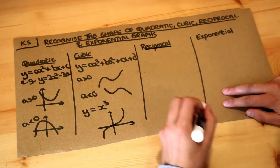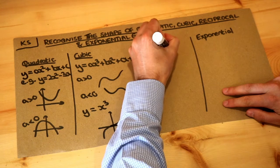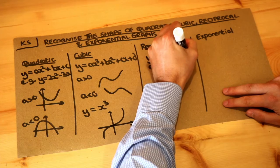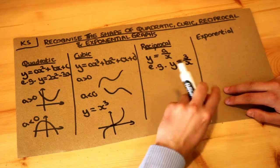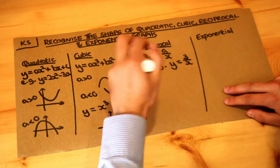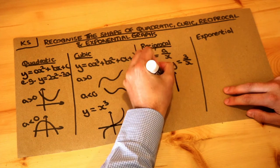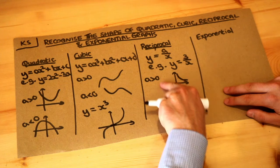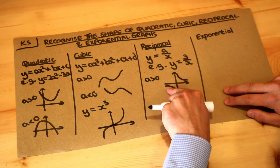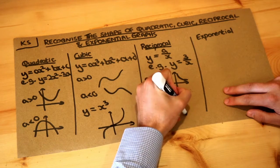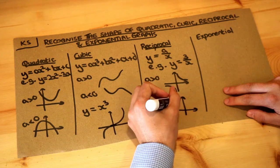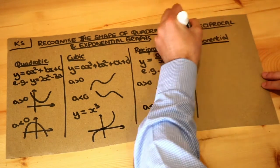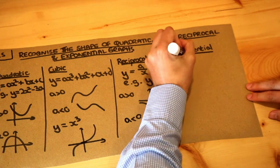What about reciprocal graphs? That's when you have y equals something over x — for example y equals 3 over x or minus 2 over x. When the number at the top is positive, so if a is positive, you get a kind of hourglass shape in the first quadrant and the third quadrant. And if a is negative then it will be in the second quadrant and the fourth quadrant.